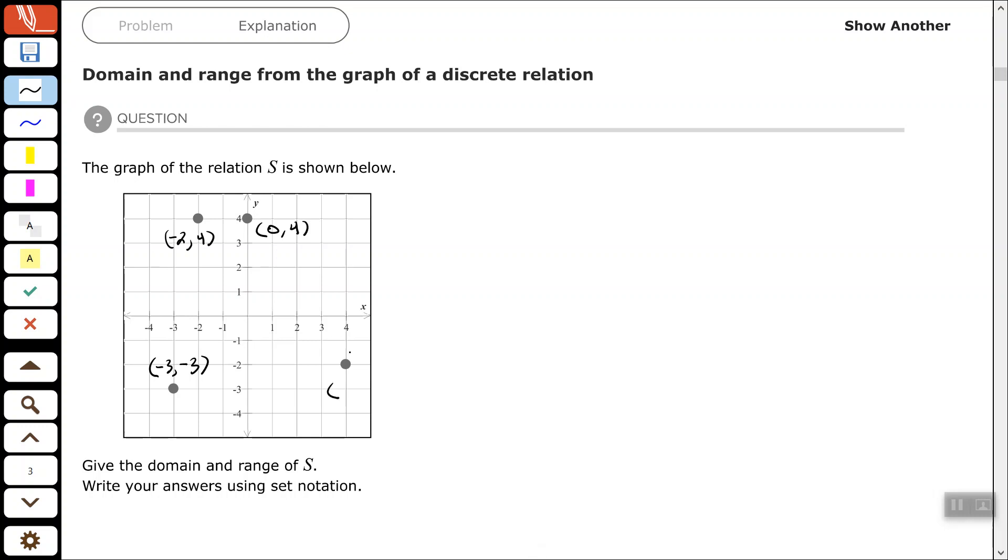And then in the fourth quadrant here, we'll go to the right four and down two. So four, negative two.